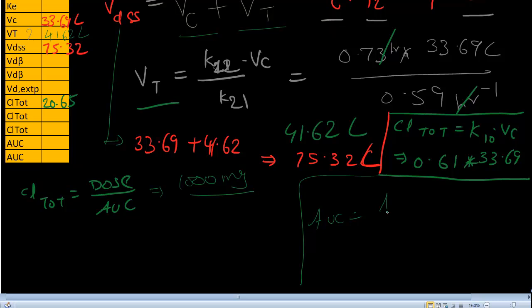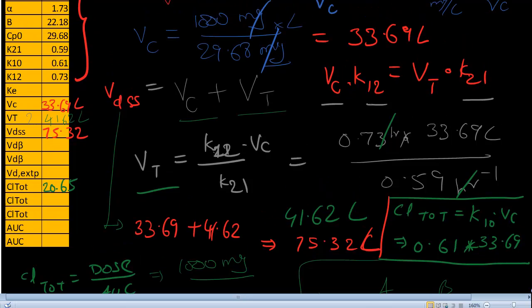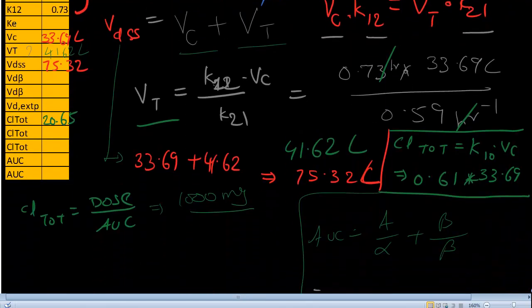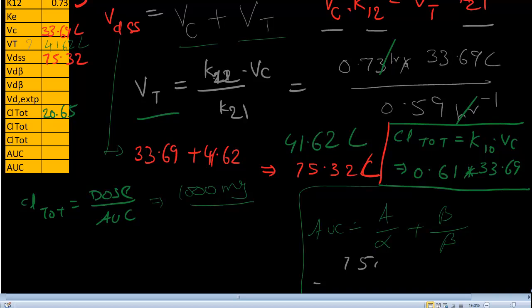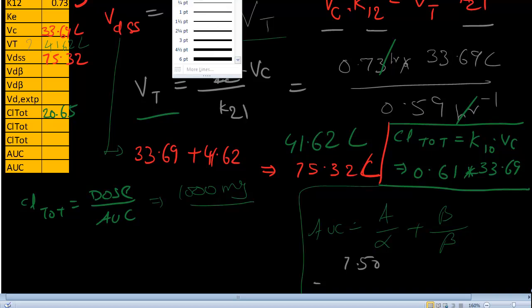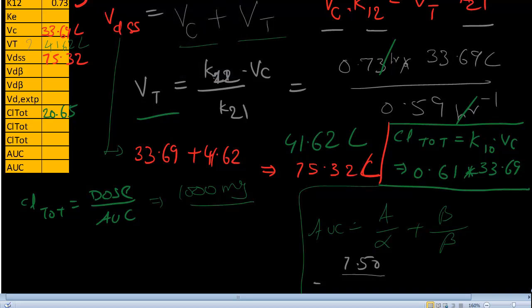AUC is A over alpha plus B over beta. So what is A? We are aware A is what? 7.50 divided by alpha, that's 1.73 plus B that is 22.18 over beta that is 0.21. If you solve this, you will get an answer of 48.43.